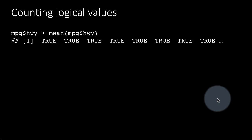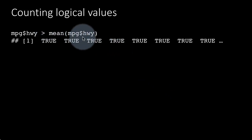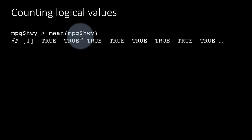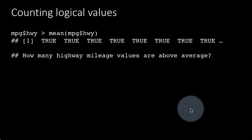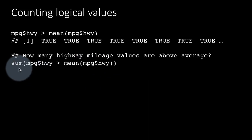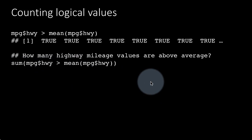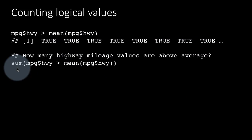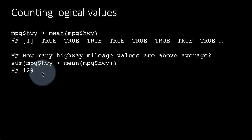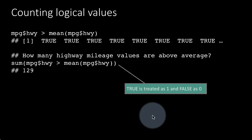Suppose we want to find out how many highway values in mpg are greater than the mean. Since R treats TRUE as 1 and FALSE as 0, all you have to do is sum them. So sum(mpg$hwy > mean(mpg$hwy)) tells us how many highway mileage values are above average — it turns out 129 of them satisfy that condition.